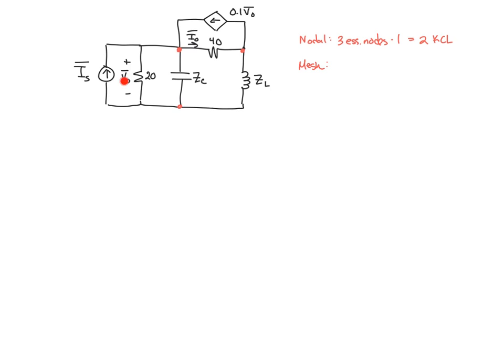So in mesh, we've got one, two, three, four meshes. But two of those meshes are known. So mesh one right here is known to be IS, mesh at the top right corner is known to be 0.1V0, so that subtract off two knowns gives us two KVLs plus our dependent variable. So they're roughly equivalent in complexity. Since we did the last example with mesh, I'm going to do this example using nodal analysis.